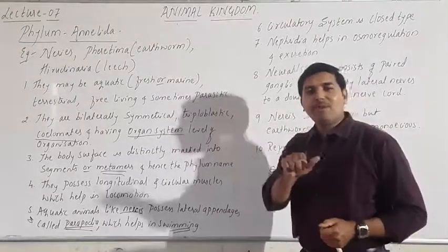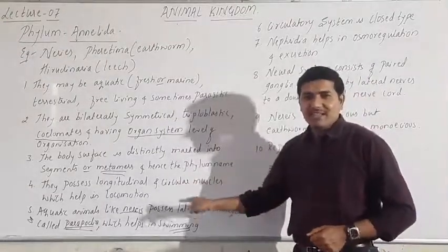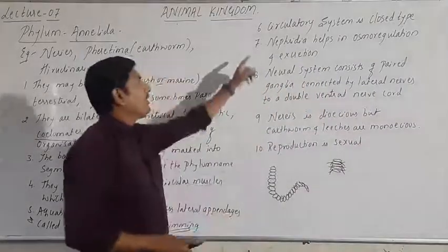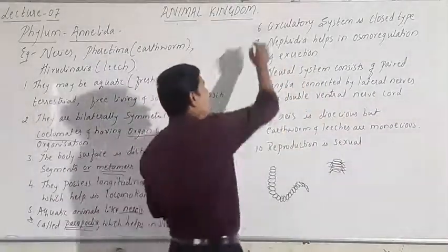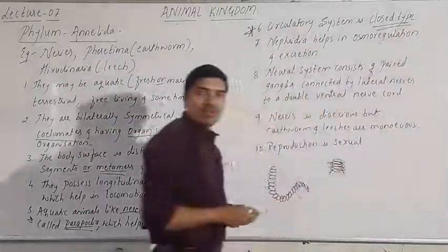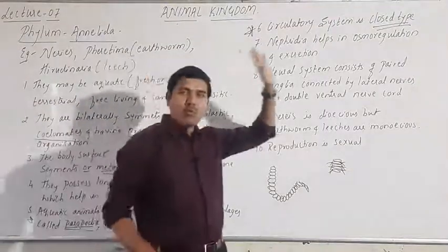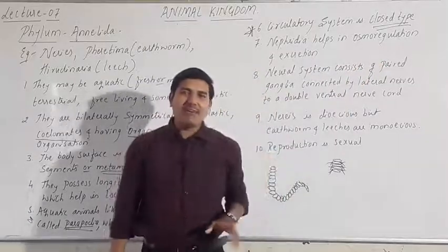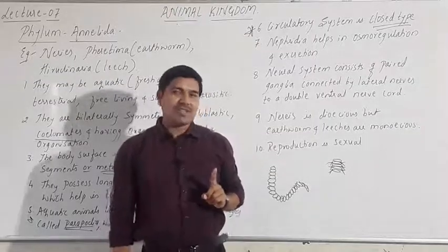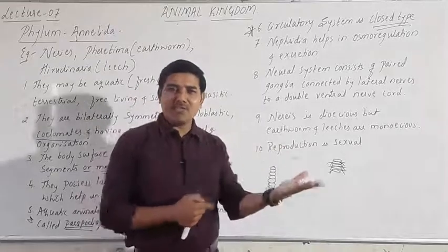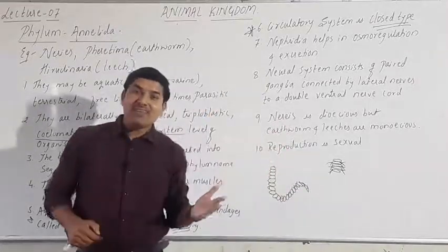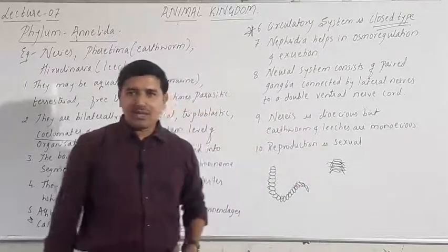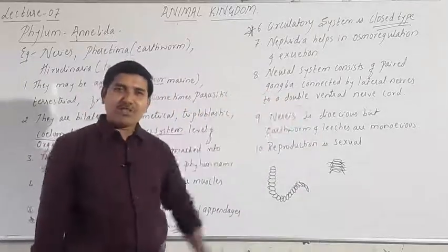These lateral appendages in Nereis are called parapodia — remember this. Parapodia help in swimming, as Nereis is present in water. The circulatory system is of closed type — the most exclusive character of phylum Annelida. This is the only invertebrate phylum that has a closed type of circulatory system.